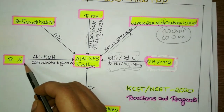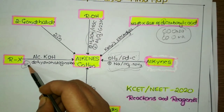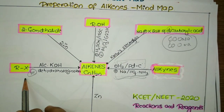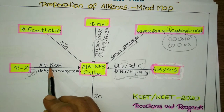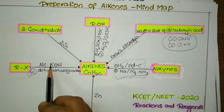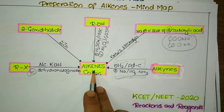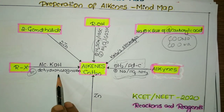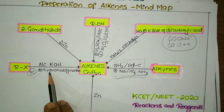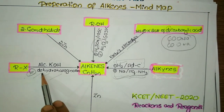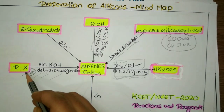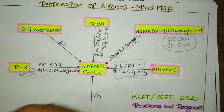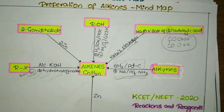The fourth method is from alkyl halides, and this is very important — compulsory questions will appear based on this. When alkyl halide is treated with alcoholic potash, it definitely gives alkenes. The process is called dehydrohalogenation: 'de' means removal, 'hydro' means hydrogen, 'halo' means halogen. So, removal of hydrogen halide from the alkyl halide gives the respective alkene. You will also apply Markovnikov's rule and anti-Markovnikov's rule here.